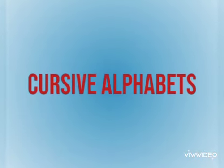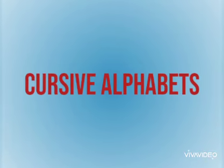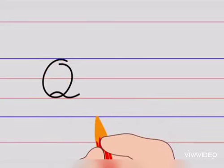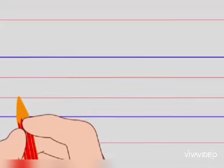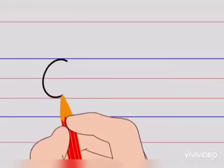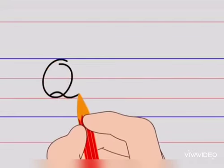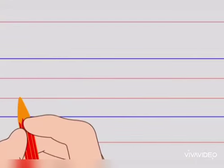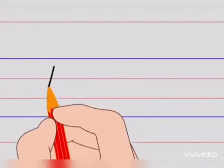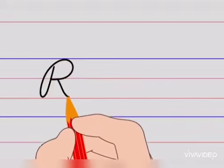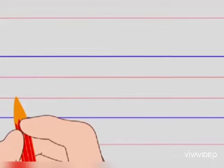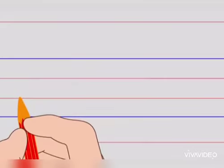Let's start Cursive Alphabets. This is Cursive Capital Q. Let's do it again — Cursive Capital Q. The next alphabet is R. Cursive Capital R. Let's do it again — Cursive Capital R.